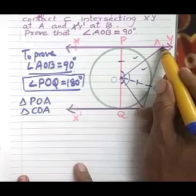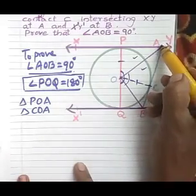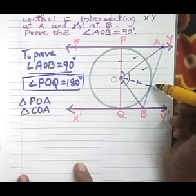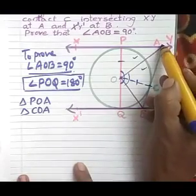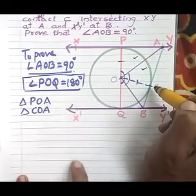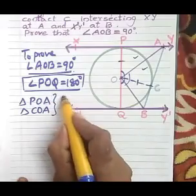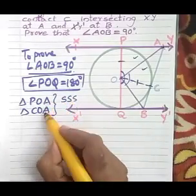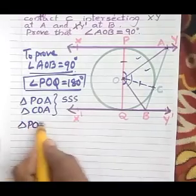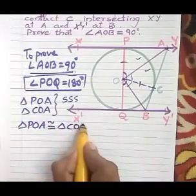OA is the common side. From the point A, AP and AC are two tangents, so they are equal. By SSS rule, these two triangles are congruent — that is, triangle POA is congruent to triangle COA.